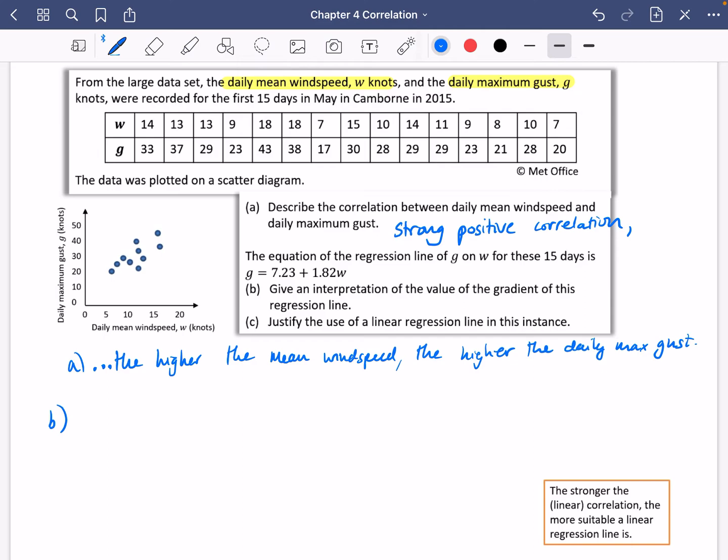Okay, it then says that the equation of the regression line G on W for these 15 days is G equals 7.23 plus 1.82W. Notice that G is in the Y place and W is in the X, which is why it's kind of like this. It's like Y equals 7.23 plus 1.82X. Give an interpretation of the value of the gradient of this regression line. So the gradient of this regression line is the 1.82 that we've got here.